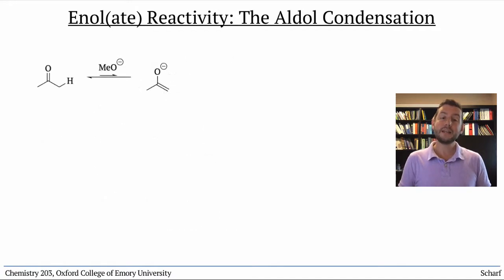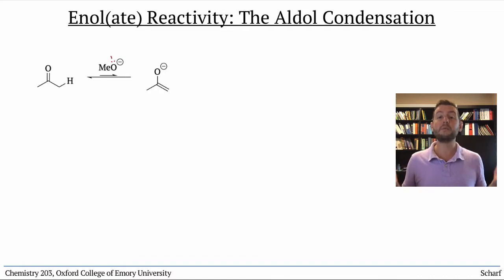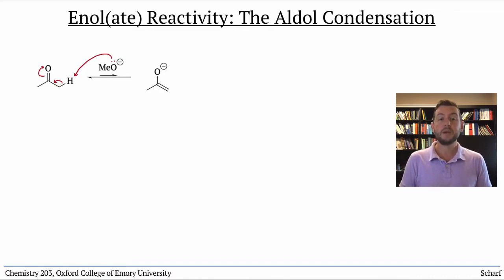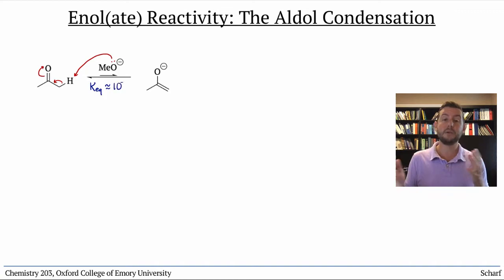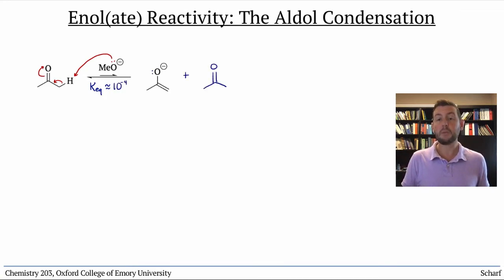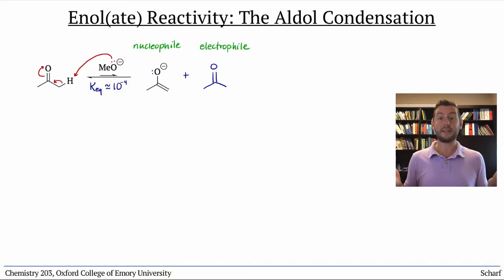When an enolizable ketone or aldehyde reacts with a run-of-the-mill base, like methoxide, we form an equilibrium mixture of the carbonyl compound and its enolate. The carbonyl compound is an electrophile, and the enolate is a nucleophile, and they can react with one another.